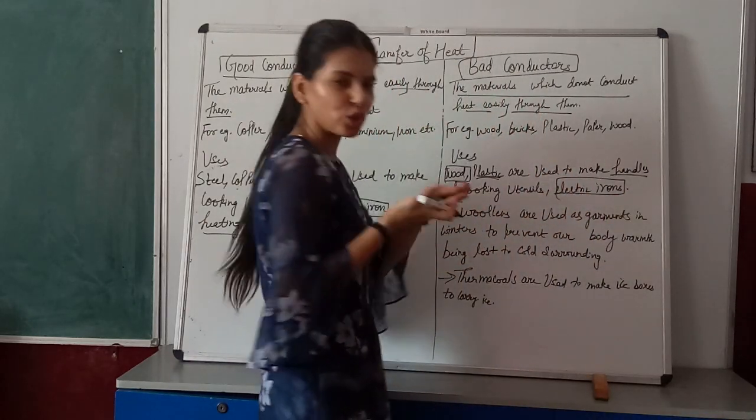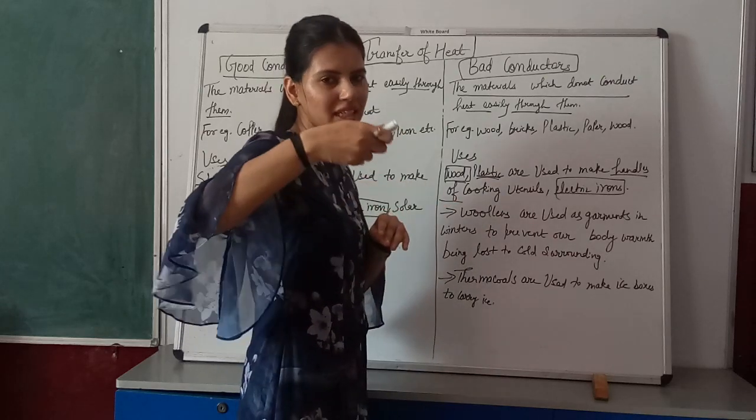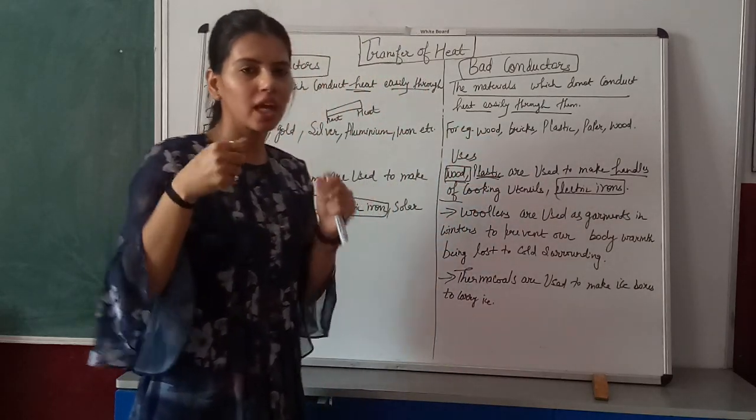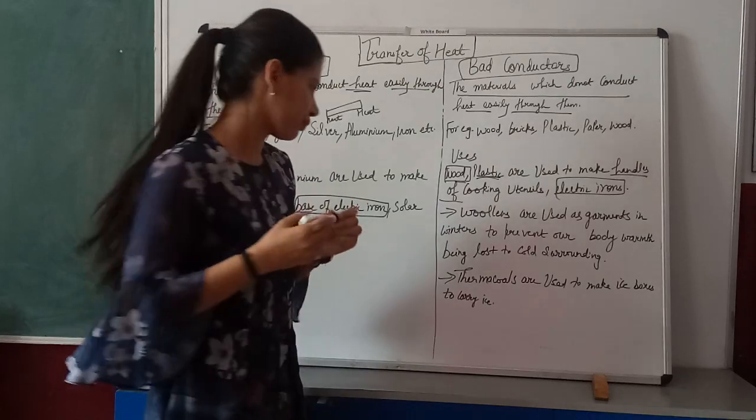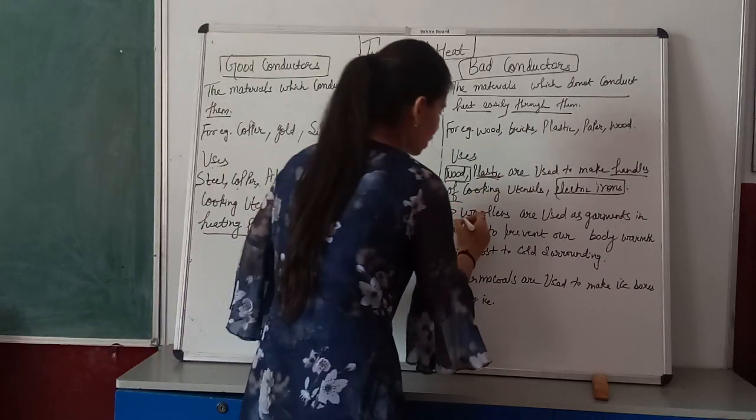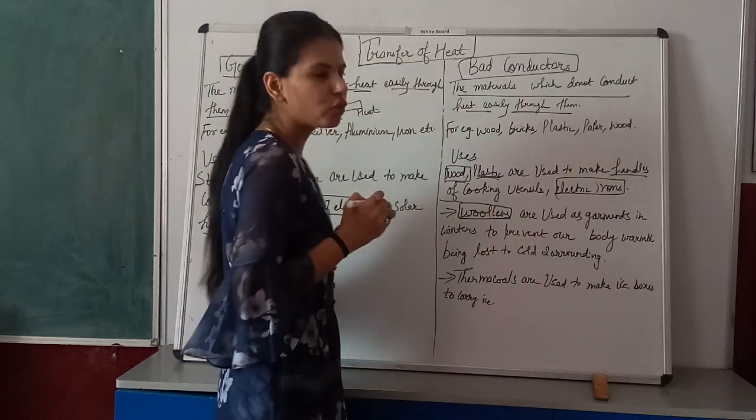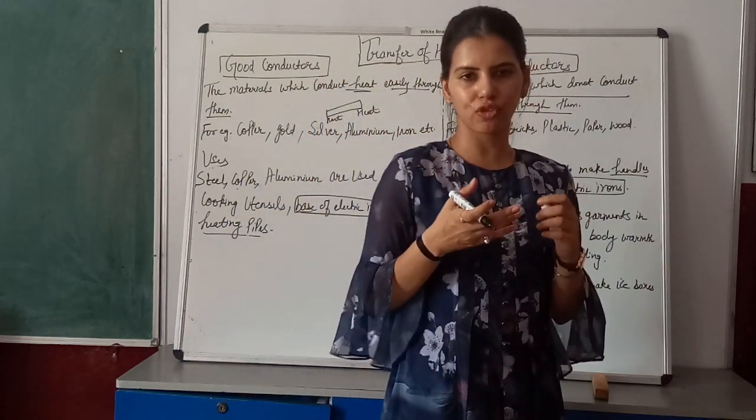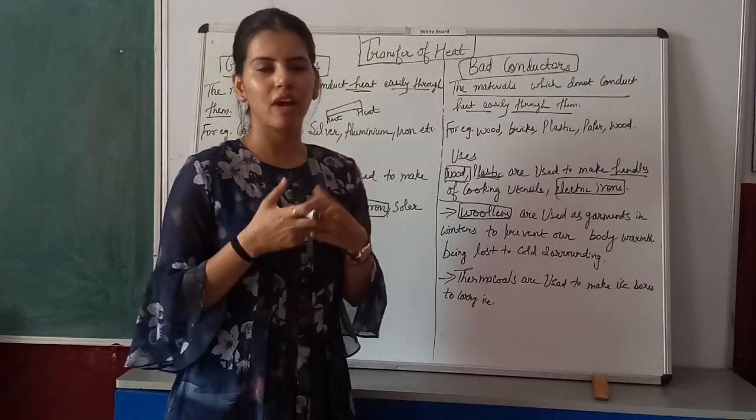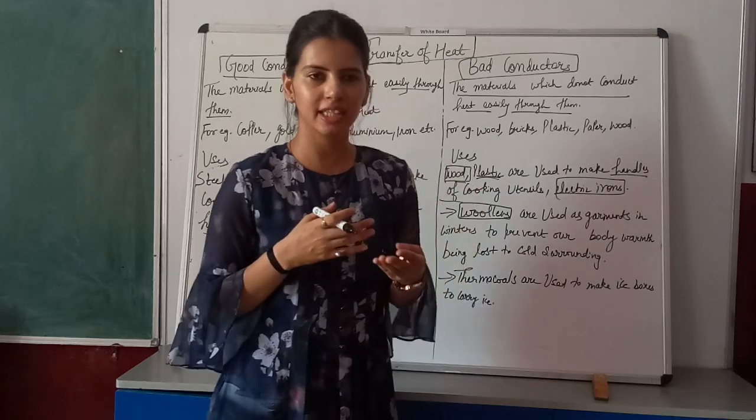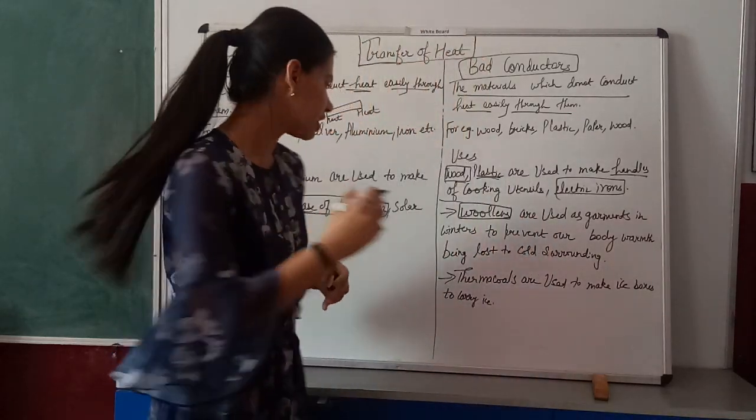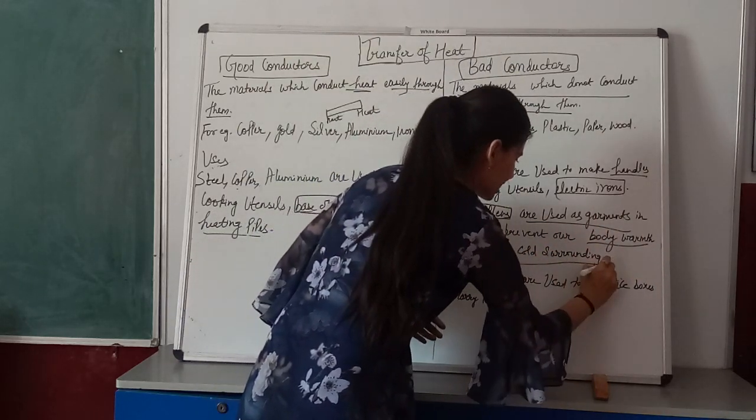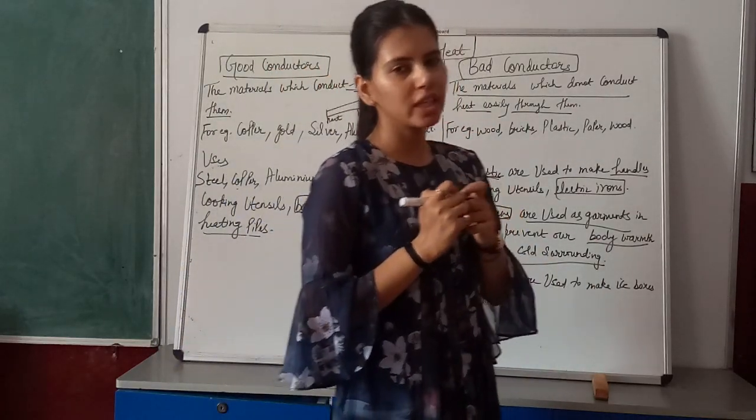Similarly, in electric irons, the base is made of good conductors but the handle is made of plastic, which is a bad conductor, so when you hold it you don't feel the heat. Another example is wool. Wool is a bad conductor of heat. When you use wool in clothes, it feels warm because wool doesn't allow your body heat to escape. That's why when you wear woolen clothes, you don't feel cold.